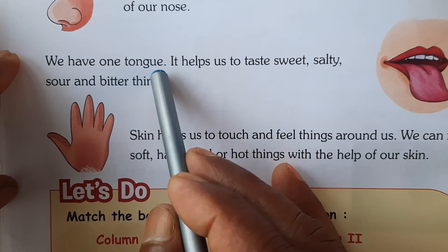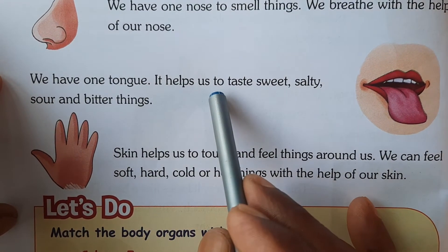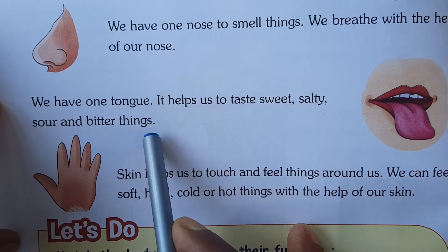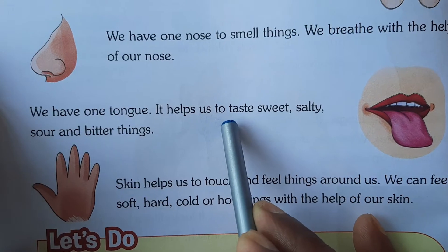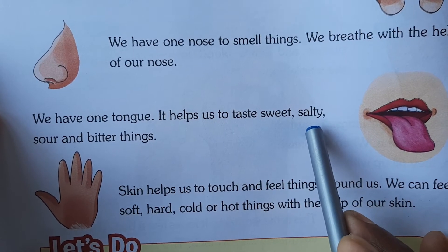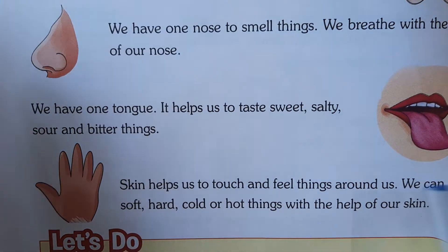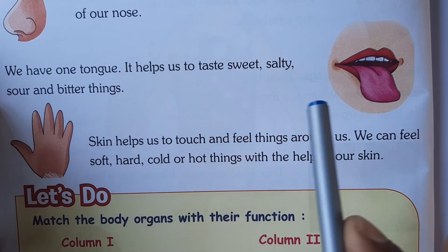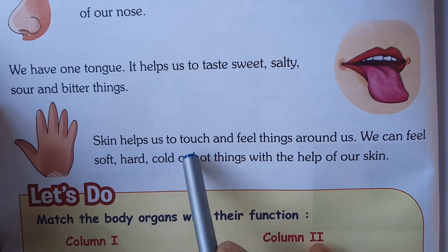We have one tongue. It helps us to taste sweet, salty, sour and bitter things — sweet means meetha, salty means namkeen, sour means khatta, bitter means teeta. We taste all these flavors with the help of our tongue.